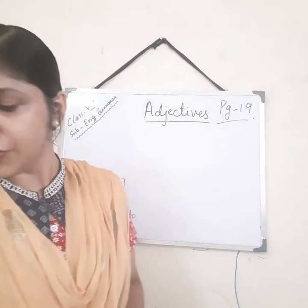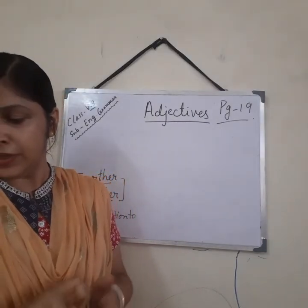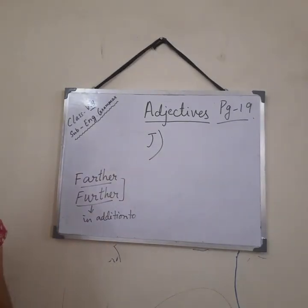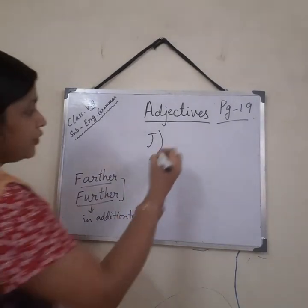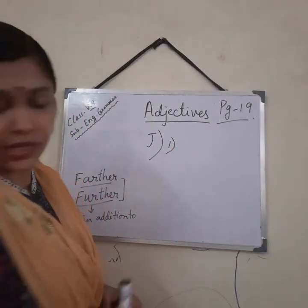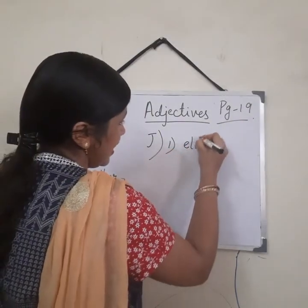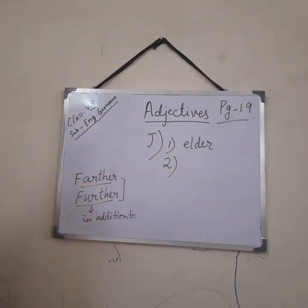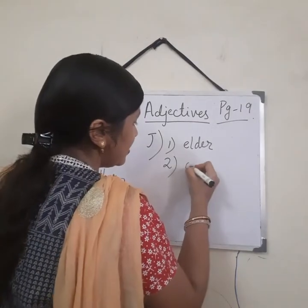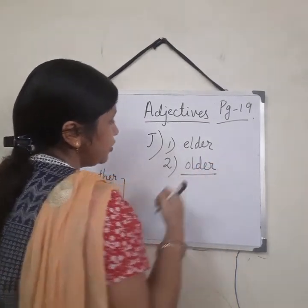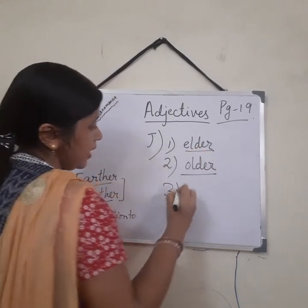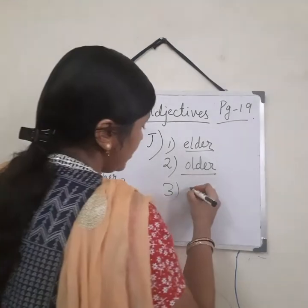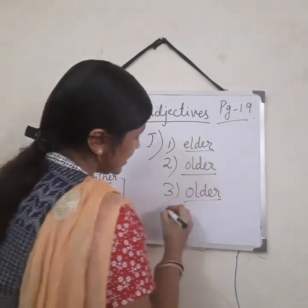These facts are already given in your book, so no need to make a note. In exercise J, you have to fill in using either elder or older — the comparative degree. Number 1: 'Jane is her elder sister.' Number 2: 'She is dash than Jane' — here 'than' is given, so we use older. Number 3: 'My brother is not older than me' — here also we use older since 'than' is given.